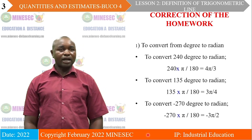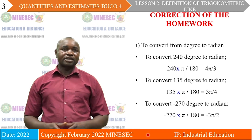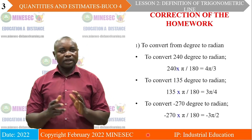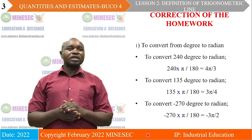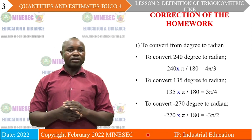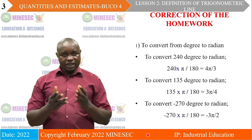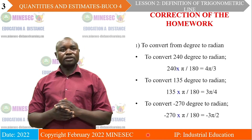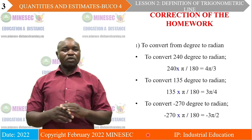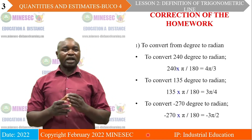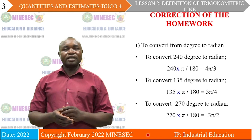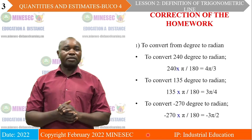Last week, you were asked to convert from degrees to radians. In the first point, to convert 240 degrees to radians, we simply multiply 240 by pi over 180. When you multiply and simplify this, the final answer that you have is 4 pi on 3.